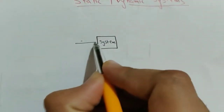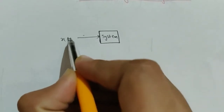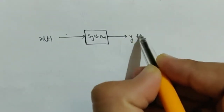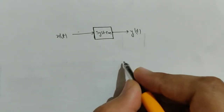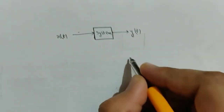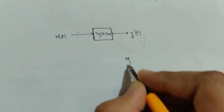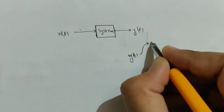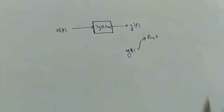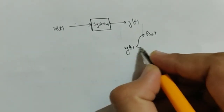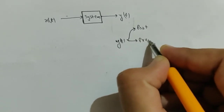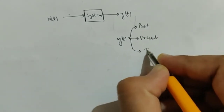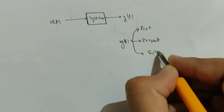Let's suppose this is your system. An input x(t) is applied to the system and an output y(t) is produced by the system. Now y(t) can either depend on past values of the input, present values of the input, or future values of the input.